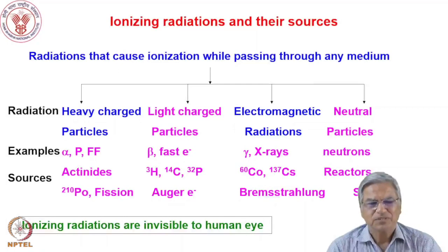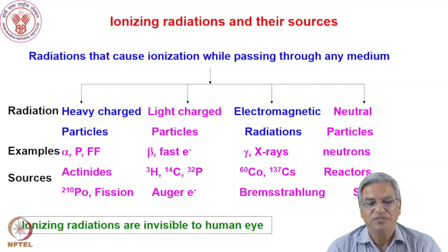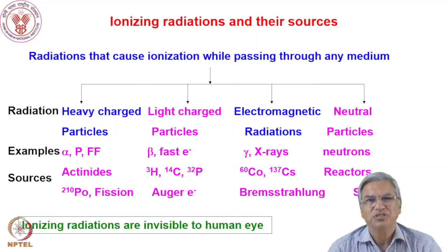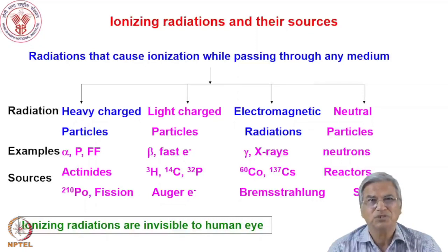Let us first discuss what type of radiations we are trying to discuss. We will call them ionizing radiations. Ionizing radiations are radiations which cause ionization when they pass through a medium, and you can understand that these radiations have energies higher than the ionization energy of different materials through which they pass. These radiations are in fact invisible to the human eye, and so you require suitable detectors if you want to detect them.